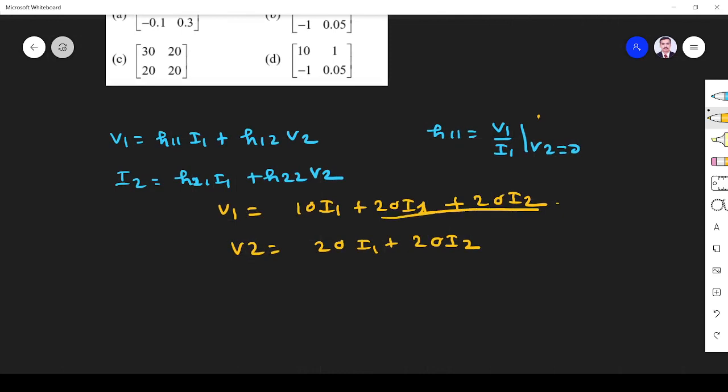For the output side, v2 equals 20 i1 plus 20 i2. Substituting equation 2 in 1, we get v1 equals 10 i1 plus v2. This is equation 1, this is 2, this is 3. Using these three equations we will solve the problem very easily.